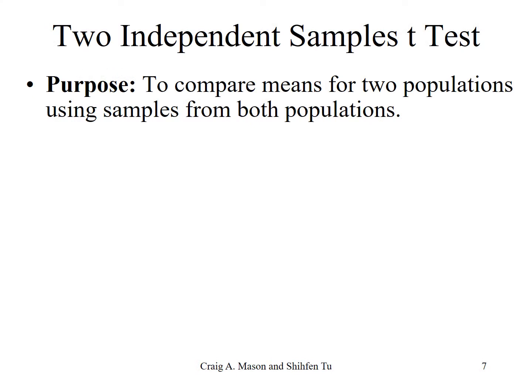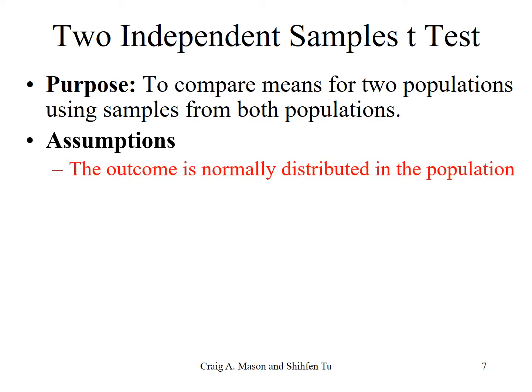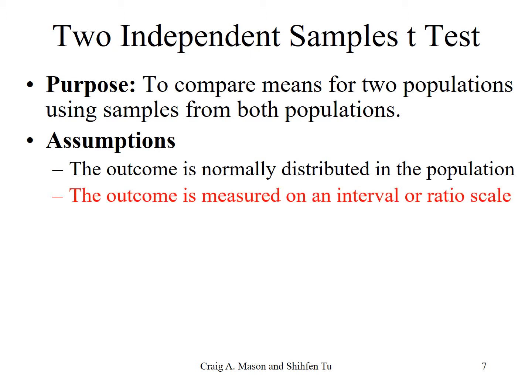As always, there are a number of assumptions that need to be satisfied. First, the outcome needs to be normally distributed in the populations. Again, if the sample size is large — say over 30 — this becomes less of an issue, and the t-test is fairly robust to some non-normality. The outcome also has to be on an interval or ratio scale, but there are other tests available if it's not.